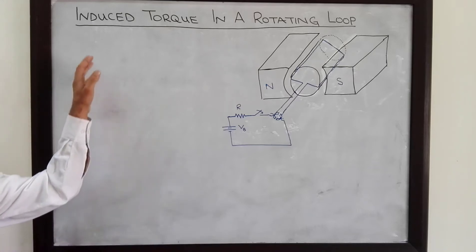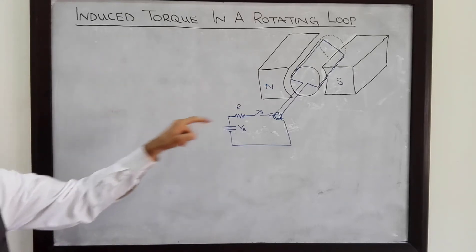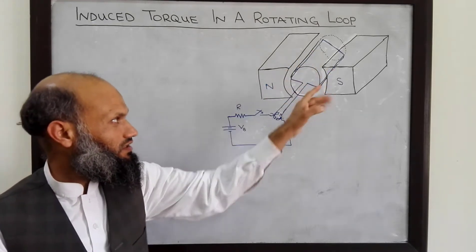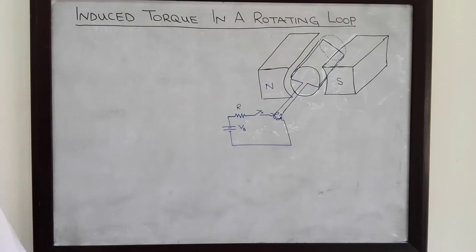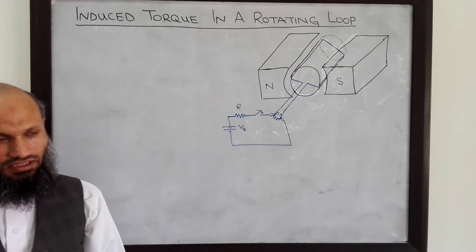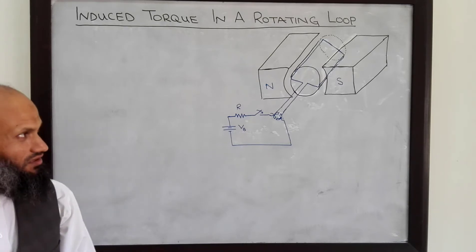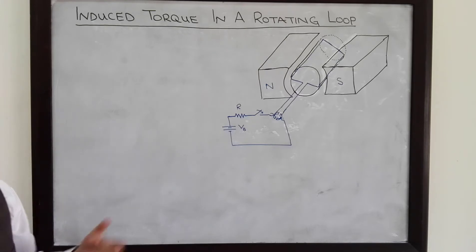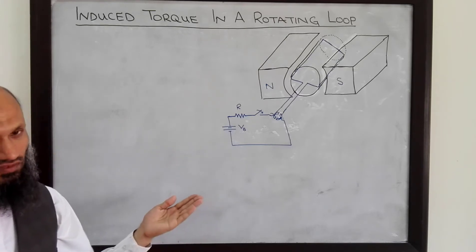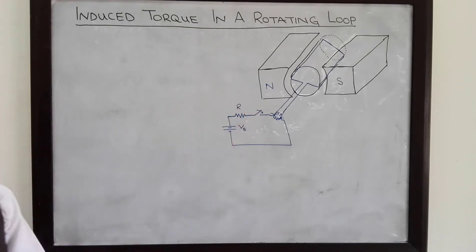Assalamu alaikum. In today's lecture we shall talk about torque induced in a loop of wire placed in a magnetic field created by curved pole faces. This will also demonstrate the working principle of actual real DC motors. We have already talked about this arrangement in the previous lecture where we had derived an expression for voltage induced in a coil rotating in a magnetic field.